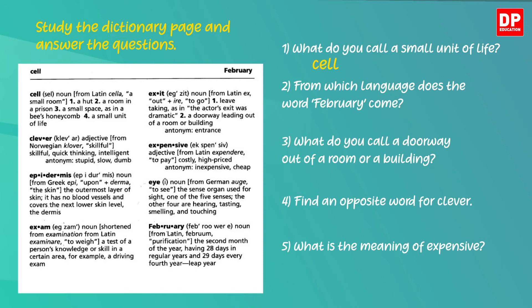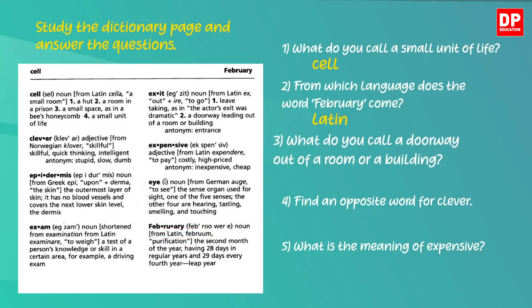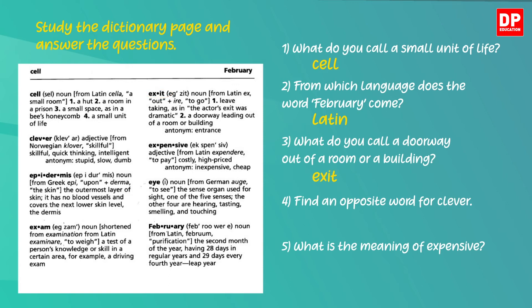Now the second one: from which language does the word 'February' come? This means the origin of the word 'February.' Now where is the word 'February'? Okay, here it is — yes, as you can see it's from Latin. Let's read the third one: what do you call a doorway out of a room or a building? It is the second meaning of the word 'exit,' so the answer is exit.